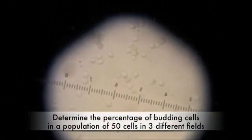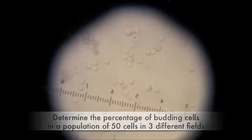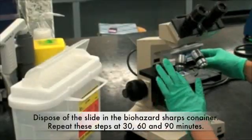Determine the percentage of budding cells in a population of approximately 50 cells in 3 different fields.